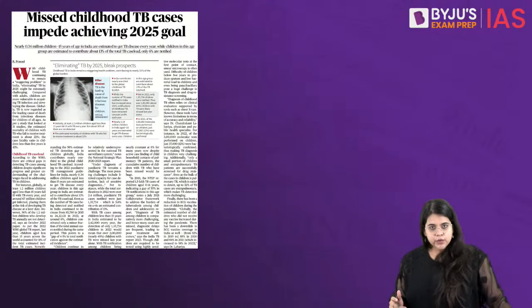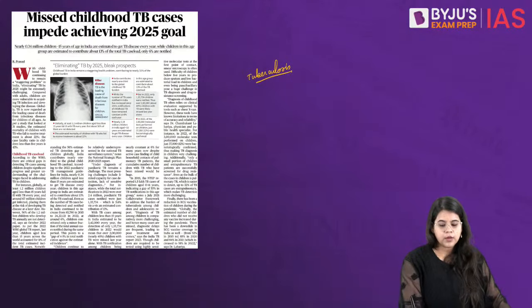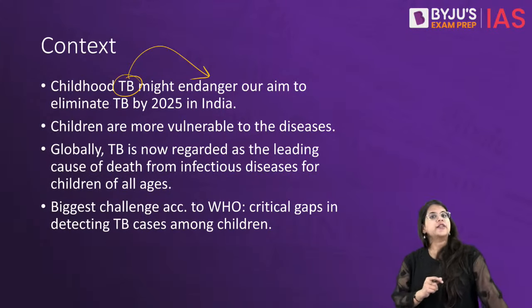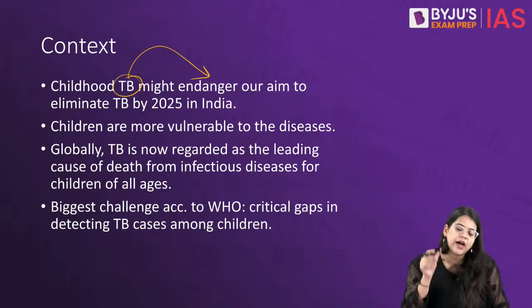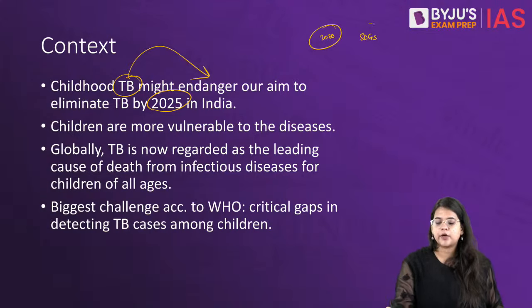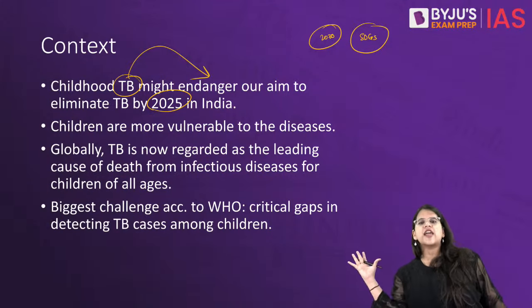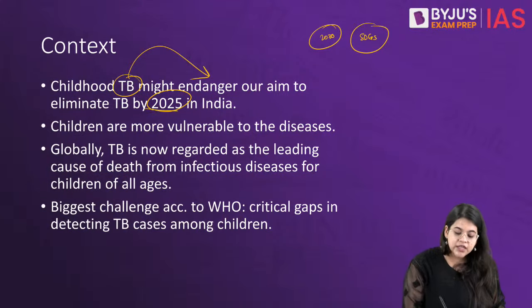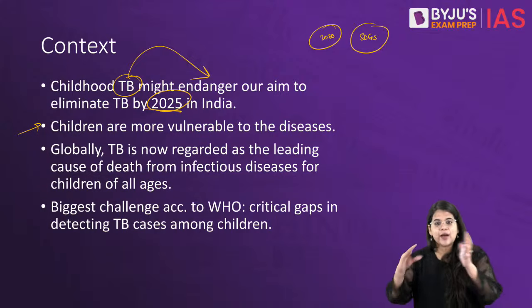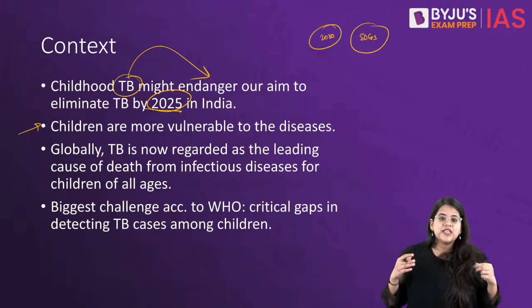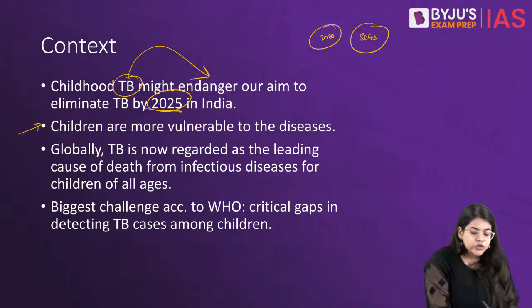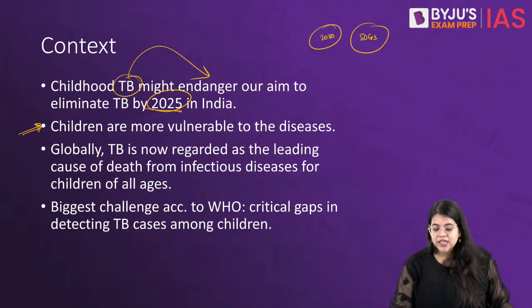We now come to the second article, regarding tuberculosis. The context is that childhood tuberculosis might jeopardize India's mission to eliminate TB from the country by 2025. The global SDG goal for TB elimination is 2030, but India set an ambitious target five years in advance. Children are more vulnerable to diseases than adults because their immune system is not fully developed, making them especially susceptible to tuberculosis.